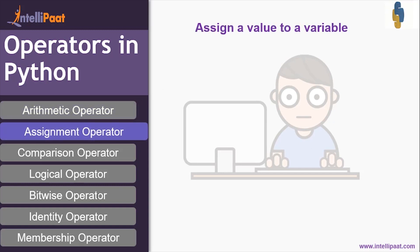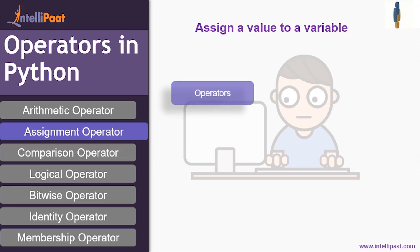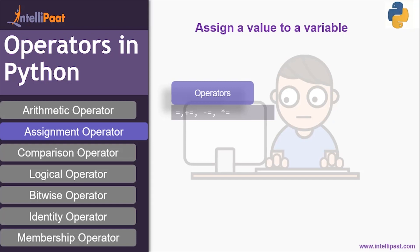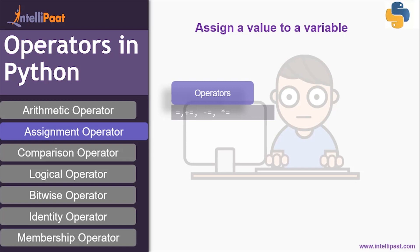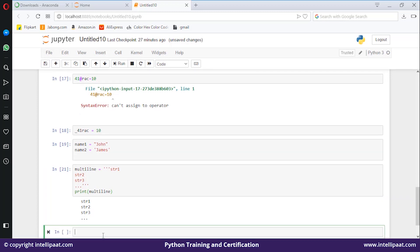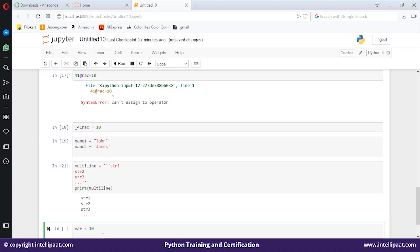Next we have the assignment operator. This operator is used to assign a value to a variable. For example, you declare a variable as var = 10 — the equals sign is your assignment operator. Let's go back to our Jupyter notebook. I'm defining a variable var = 10, so that equals sign is the assignment operator. Then var += 10 is also an assignment operator — but what does this mean?